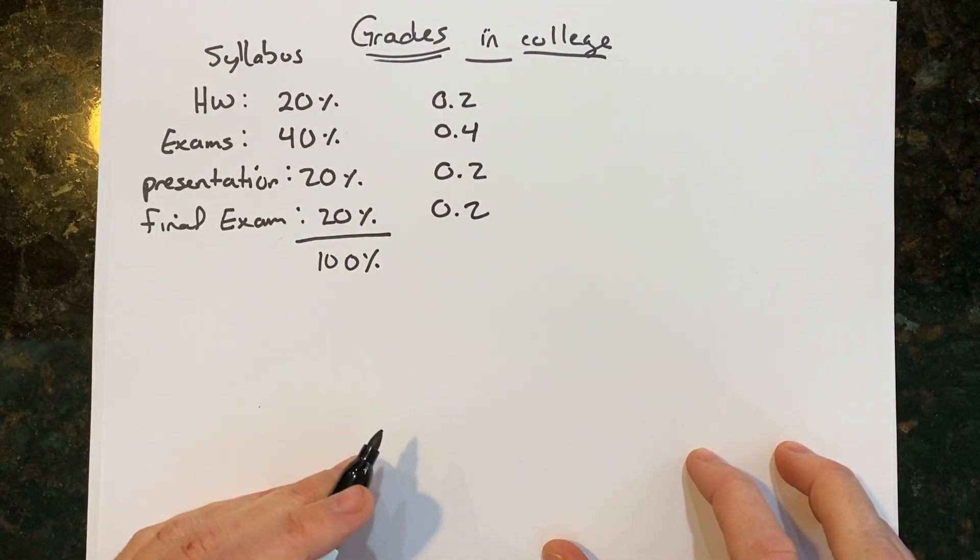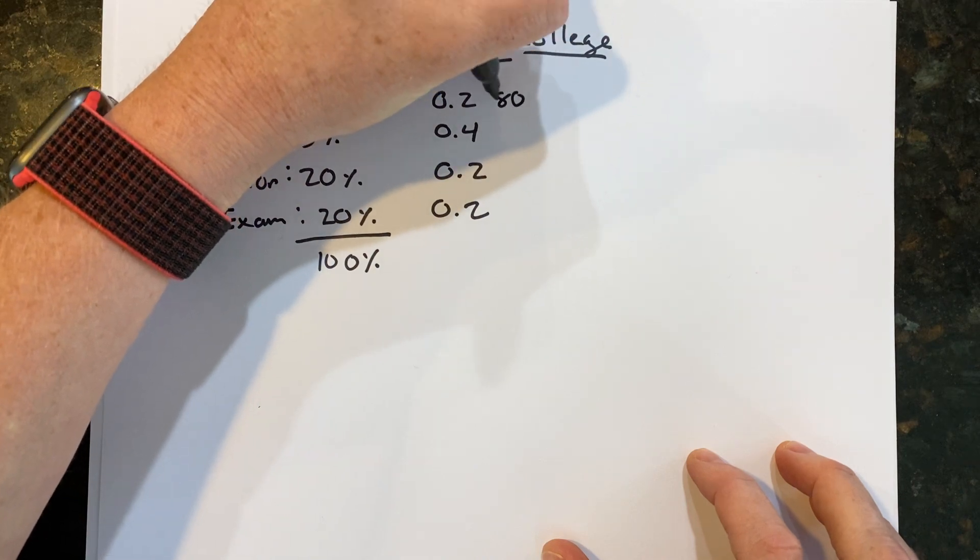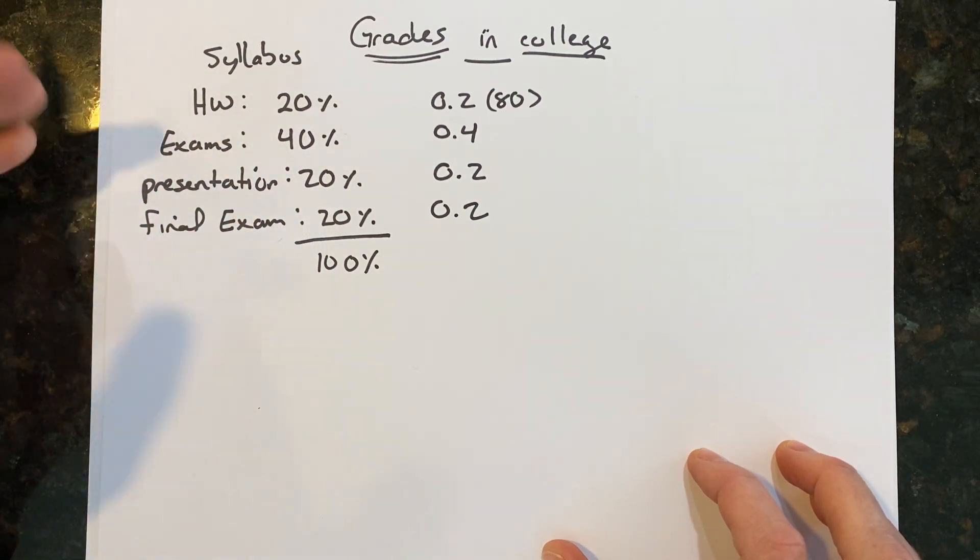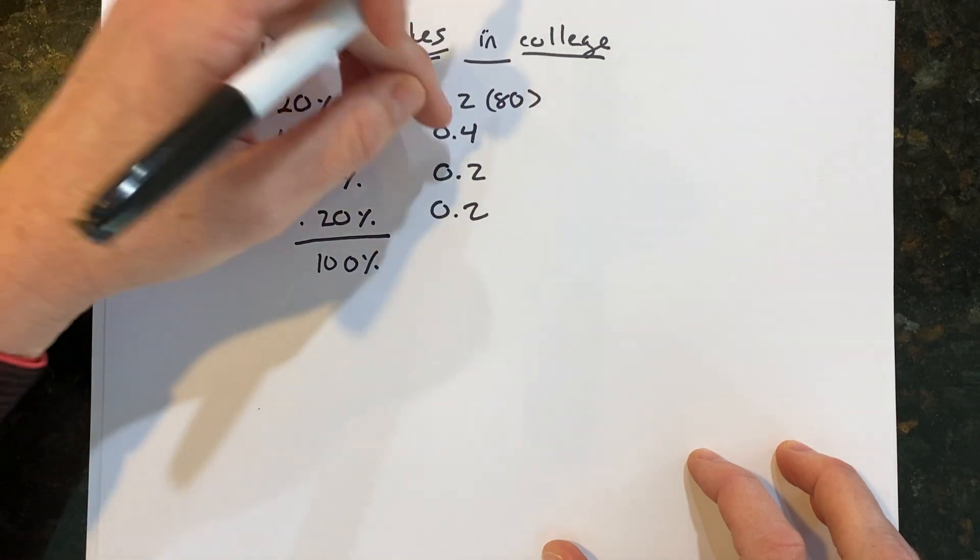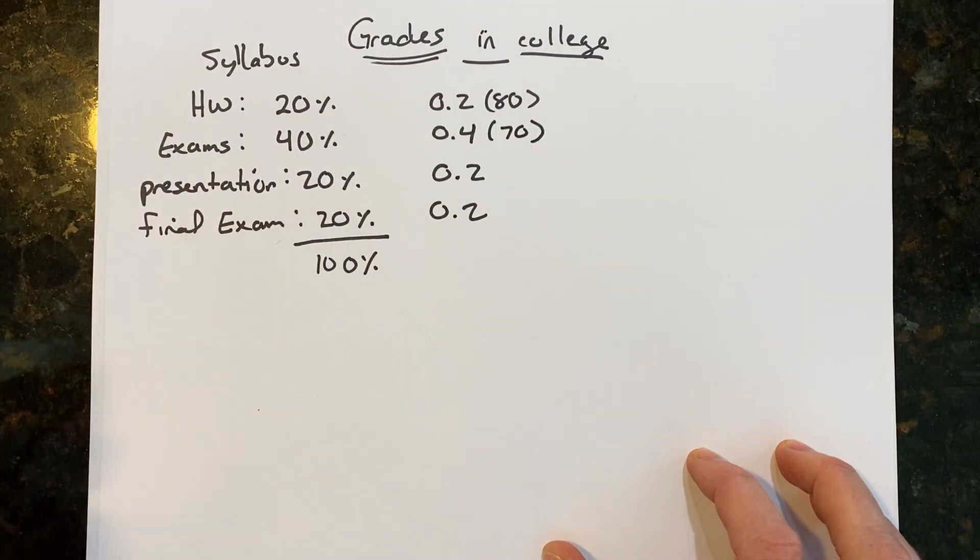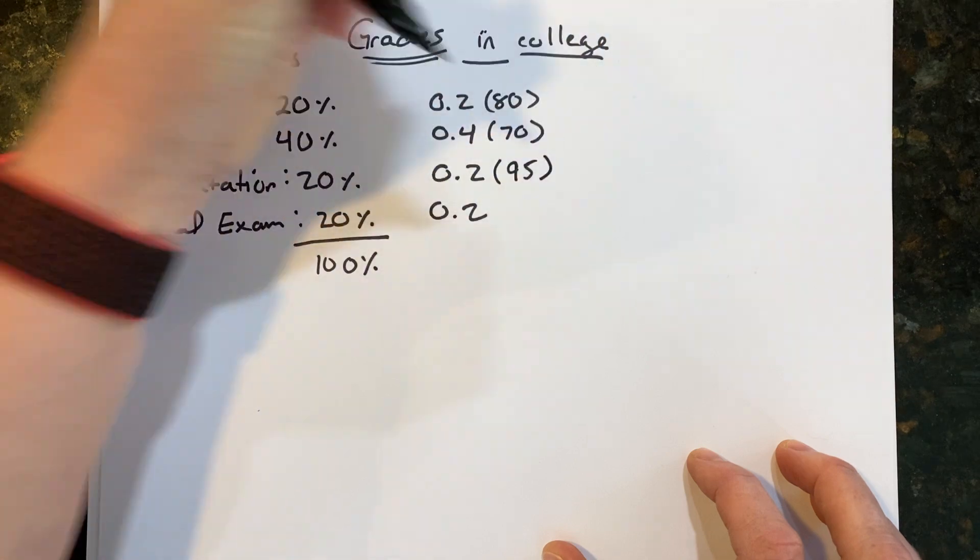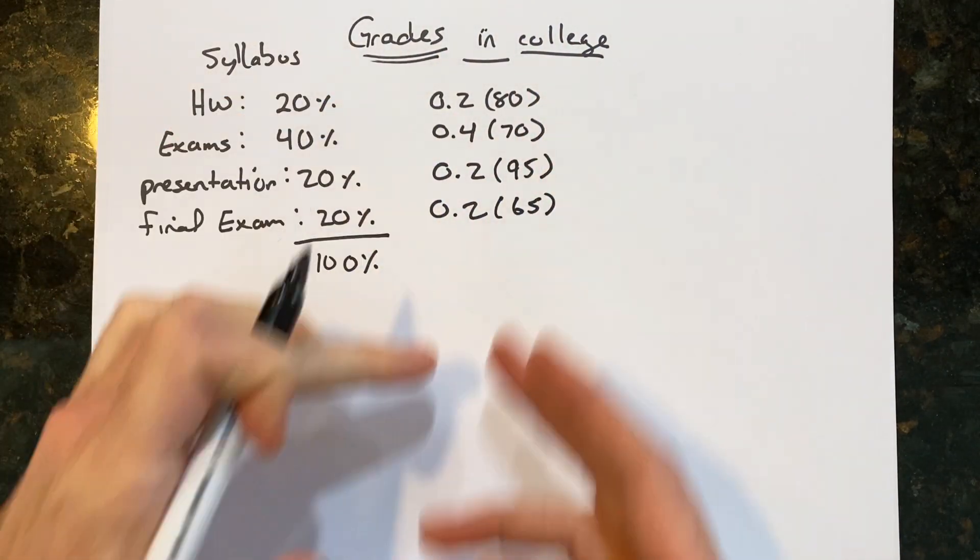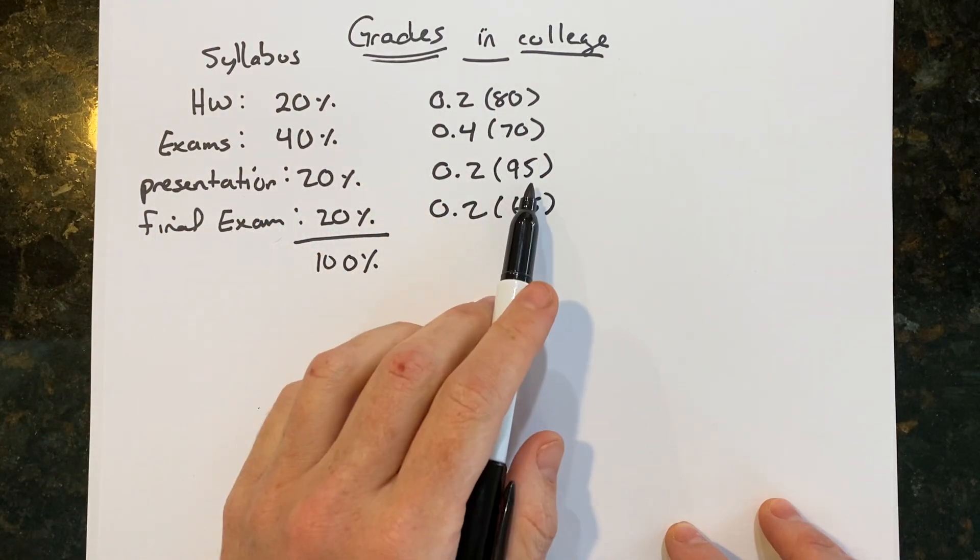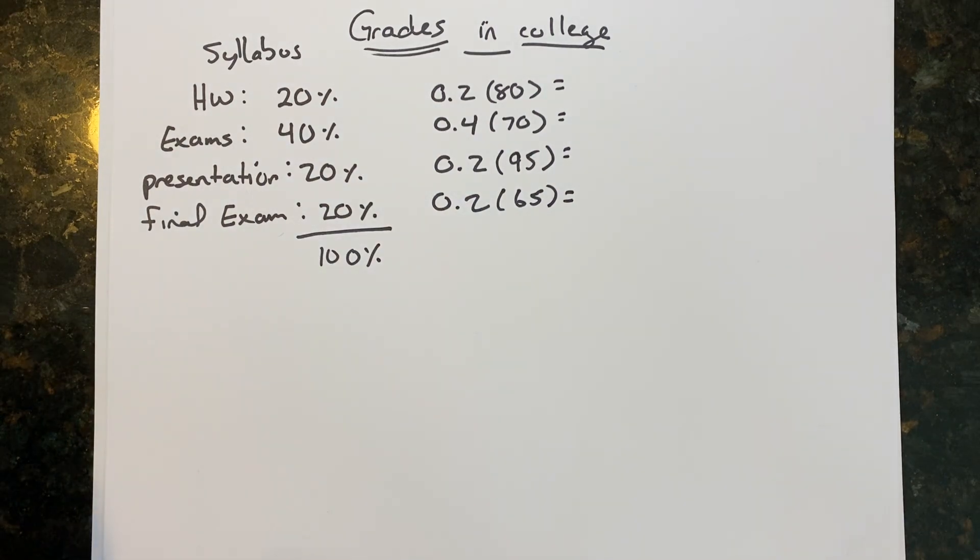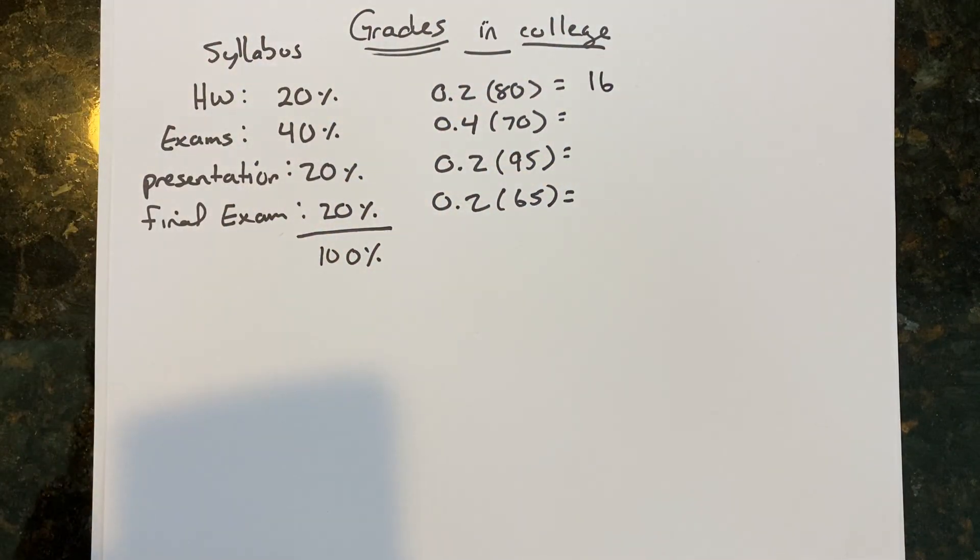Now you can take this value and multiply it by your respective grade. Let's say your homework grade is 80, your exams, and it doesn't matter, we could be talking about your first exam or maybe you had four exams each worth 10%. If you take your average of your exams, that's what's going to go here. So let's say you got 70, your presentation, good job on your presentation, you rocked it, you got a 95, and your final exam, oh that was a rough one, you got a 65. If these happen to be your grades, you got an 80 in homework, you had a 70 on your exam, you got a 95 on your presentation, a 65 on your final exam, you can calculate your grade by multiplying each of these things and then summing them up.